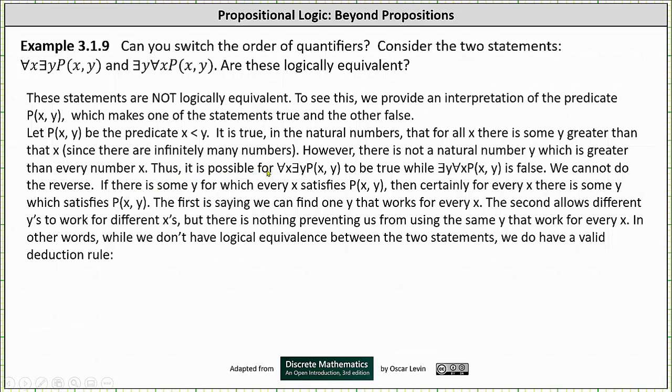Thus, it is possible for for every x there exists a y such that P(x, y) is true, while there exists a y for every x such that P(x, y) is false.